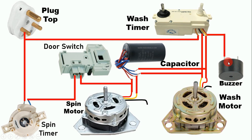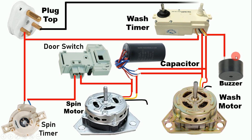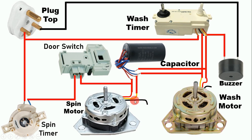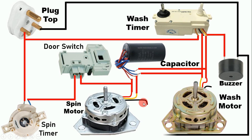Now we have to provide neutral power supply to the buzzer and motors. From the left-hand side pin of the plug top, connect a wire to the second terminal of the buzzer — the buzzer now gets both phase and neutral supply. After this, loop a wire from the neutral line to the common terminal of the spin motor. Similarly, provide neutral power supply to the common terminal of the wash motor.